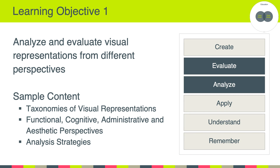Some of the topics we'll be covering include learning about different taxonomies of visual representations — what are all the different types of visual representations that are out there? For example, what's the difference between symbolic and iconic representations? In terms of different perspectives, we're going to learn that we can analyze visual representations from functional, cognitive, administrative, and aesthetic perspectives. We'll also learn strategies for analyzing and evaluating various types of representations.